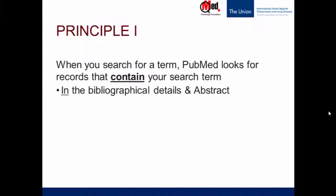Where do records contain the search term? In the bibliographic details and abstract. The search engine searches for the term in the bibliographic details and abstract. It does not crawl out to the rest of the web and search the full text. The full text is not in the PubMed database — it's on the journal website. The PubMed search engine does not go out and search the journal website. It only searches for your term in the bibliographic details and abstract.